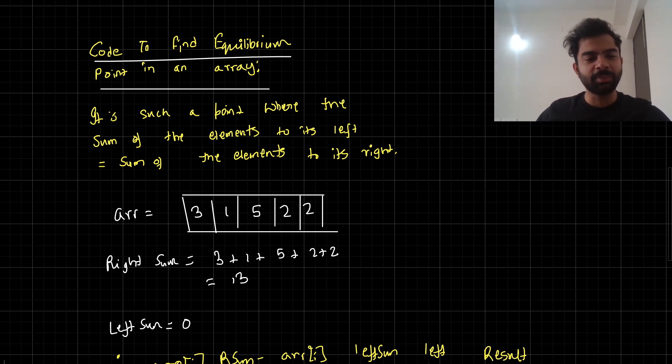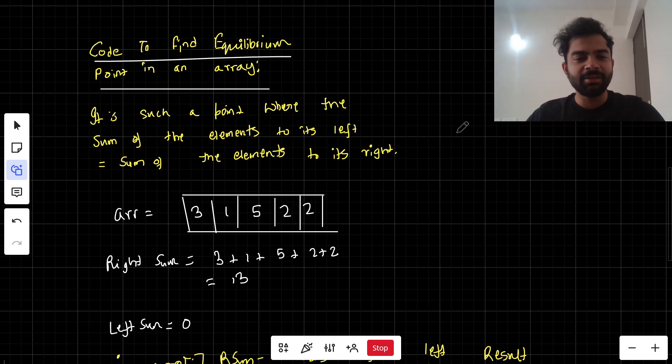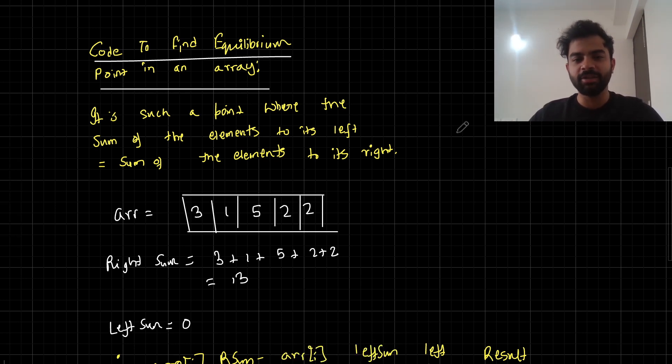Today's problem is finding an equilibrium point in an array. What is an equilibrium point? It's a point where the sum of the elements to the left equals the sum of the elements to its right.